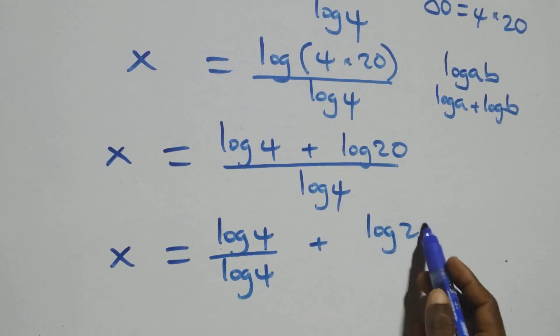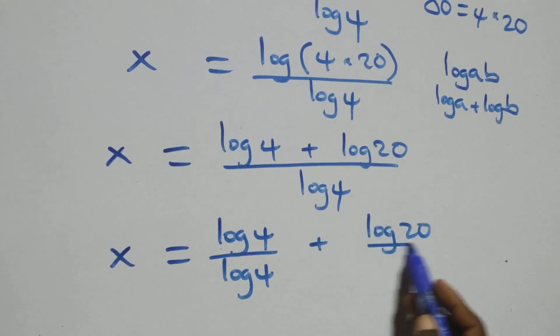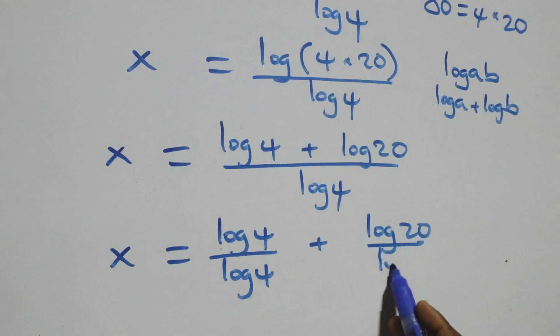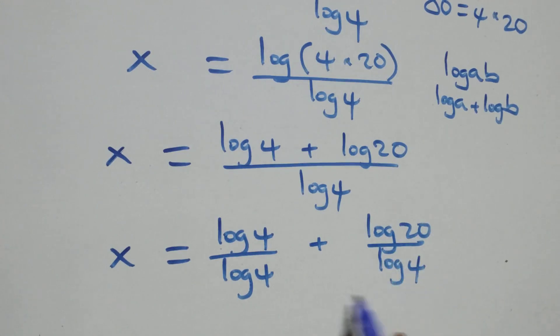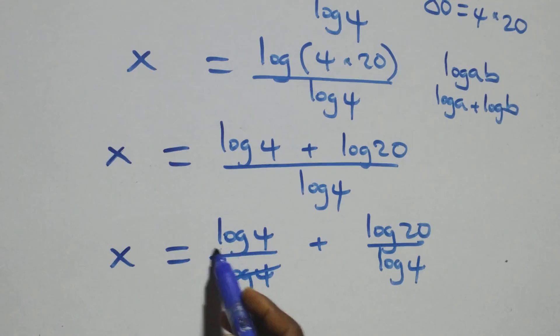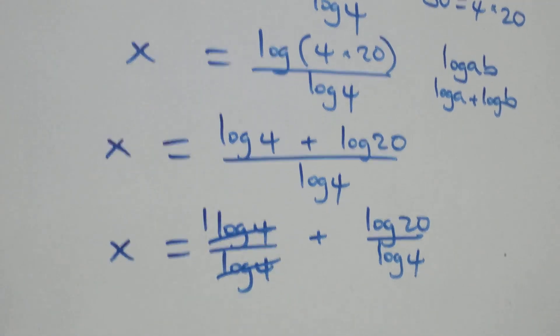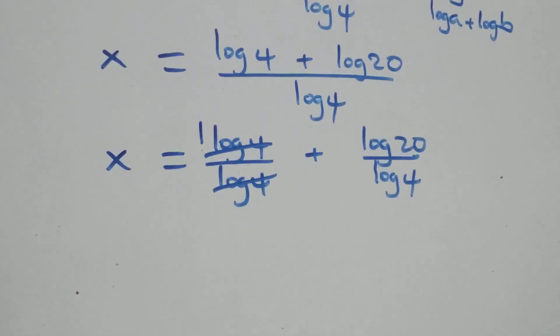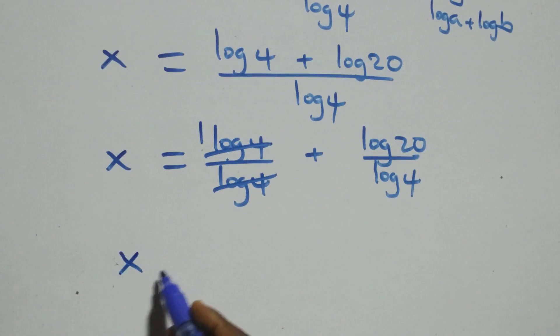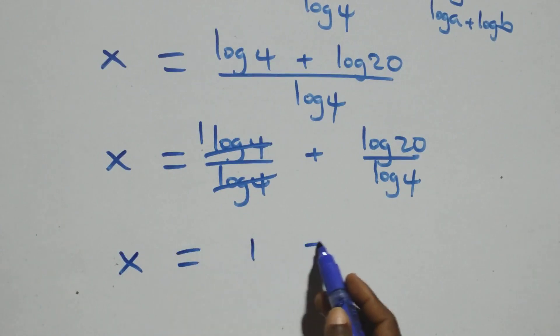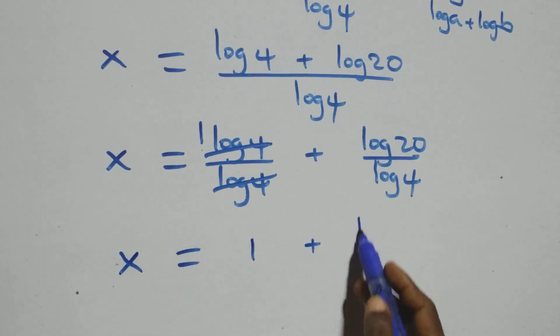Log 4 cancels with each other here, and we have one left. So we have x equals to 1 plus log 20 over log 4.